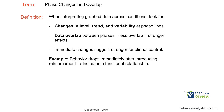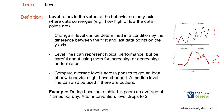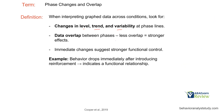When interpreting graph data across conditions, look for level, trend, and variability changes at the phase lines. When we change conditions, how do the data change? Data overlap between phases: less overlap equals stronger effects. If we change phases or conditions and the data look the same, that's not a very strong effect. Immediate changes suggest stronger functional control. For example, if behavior drops immediately after introducing reinforcement, that indicates a stronger functional relationship. If I have a baseline A where behavior is elevated, and then I introduce my intervention and it immediately drops, that's a better indicator of a strong functional relationship, given there are no confounds or extraneous variables.